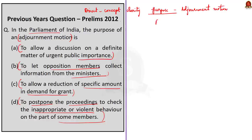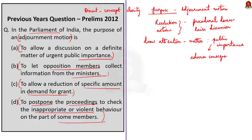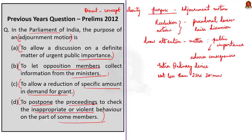Motions and resolutions are procedural devices used for raising a discussion in the house on a matter of general public interest. An adjournment motion is introduced in the house to draw attention to a definite matter of urgent public importance. The primary objective is to draw the attention of the house to a recent matter of urgent public importance which has the potential for serious consequences if not paid careful attention. The adjournment motion is regarded as an extraordinary device because it interrupts the normal business of the house, and the discussion on this motion should last for not less than 2 hours and 30 minutes.